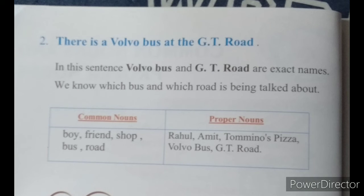Another sentence: there is a Volvo bus at the GT road. In this sentence, Volvo bus and GT road are exact names, and we know which bus and which road is being talked about. So Volvo bus and GT road are called proper nouns.